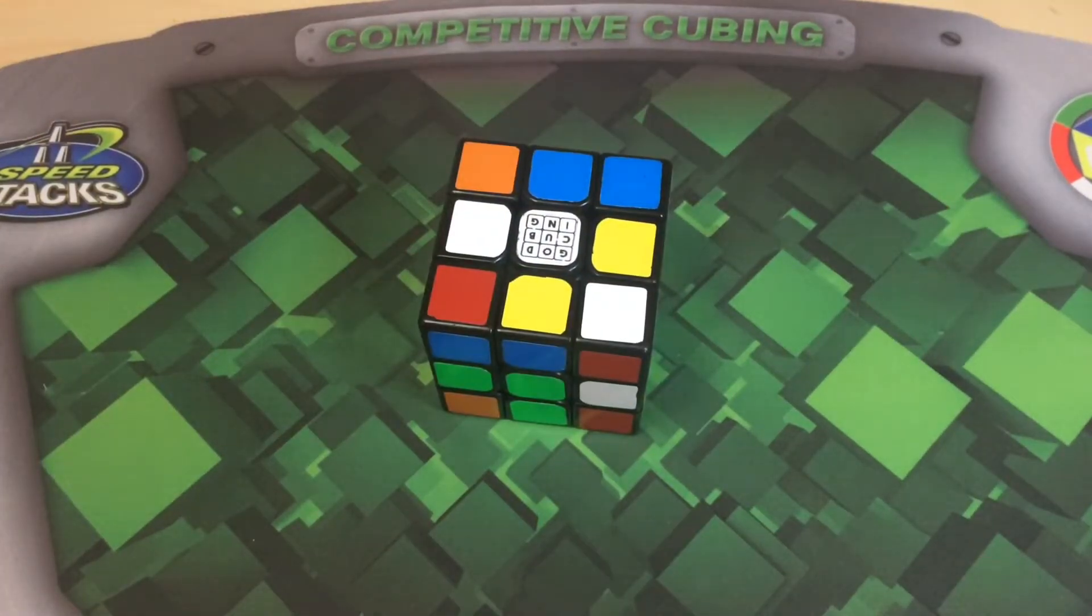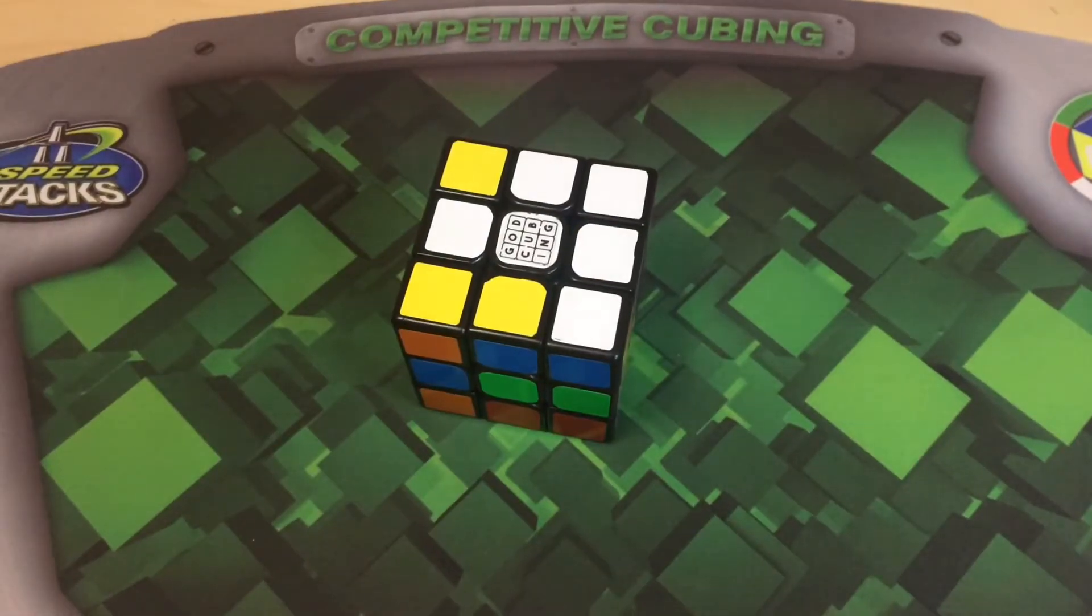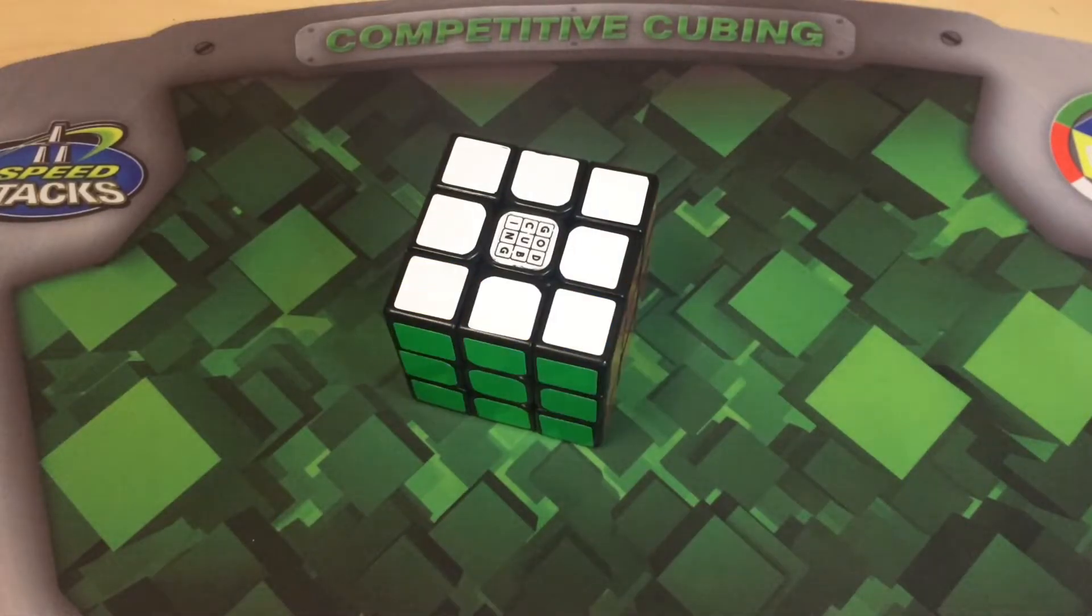Then we get all white or yellow on the top and bottom, like this. And then we make it so that we can solve it using only double moves, like this. And then we solve it.